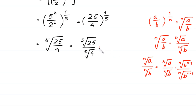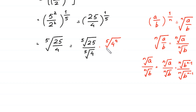We multiply and divide this expression by the 5th root of b to the power n minus 1. In this case b equals 4, so n minus 1 is 5 minus 1 equals 4. We multiply and divide by the 5th root of 4 to the power 4.